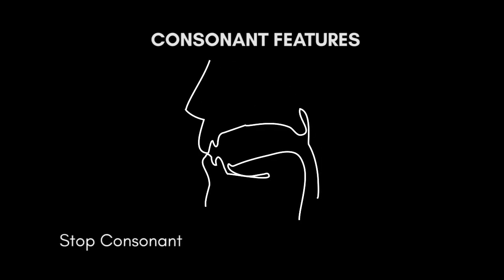Then there are stop consonants. Stop consonants occur when you block the air and then the air quickly builds up pressure behind the articulators and then releases it in a burst, producing the sound. English contains the following stop consonants: b, p, d, t, g, and k.